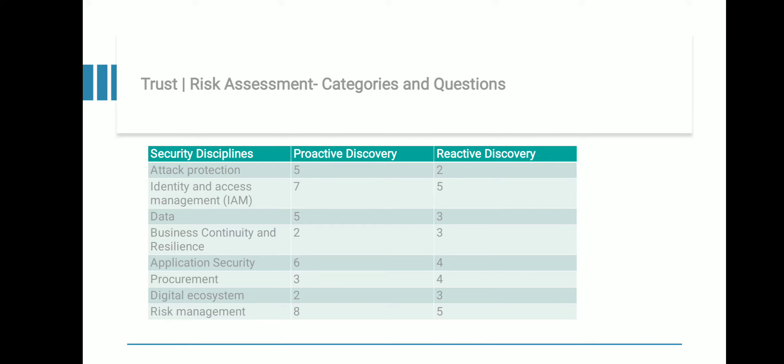So now we need an approach where you have bottom-up visibility as well as top-down visibility. It is more of an augmentation from top-down to bottom-up or bottom-up to top-down. We need both approaches in order to make sure that we have a very strong framework in place. Now let's get back to the risk assessment. Here I have divided the security disciplines: attack protection, identity and access management, data, application security, and so on. For each security discipline, there are a set of questions in the proactive discovery space as well as the reactive discovery space.